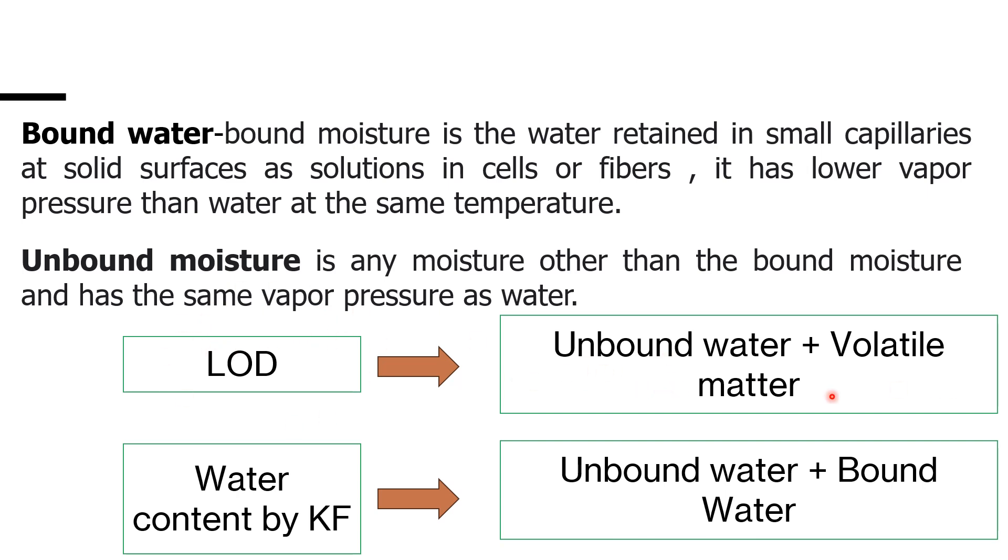Water content can be determined by KF, Carl Fischer titration. By doing water content by KF, by a chemical method, we will get unbound water as well as bound water. So water content by using KF we will get only unbound and bound water.